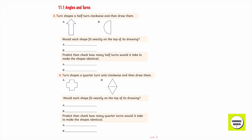Turn the shapes a half turn clockwise and then draw them. Would each shape fit exactly on top of its drawing? A: no. B: no. Predict, and then check. How many half turns would be needed to make the shapes look identical? Two half turns.